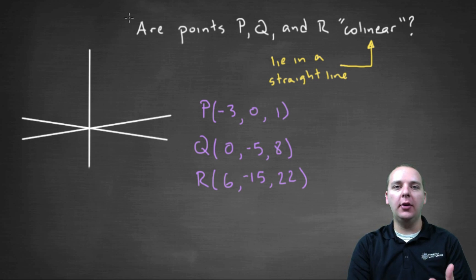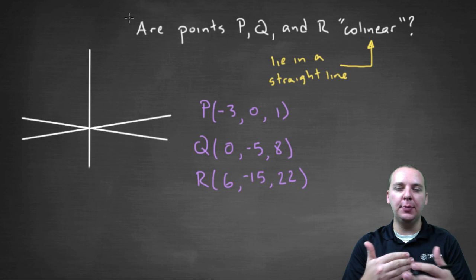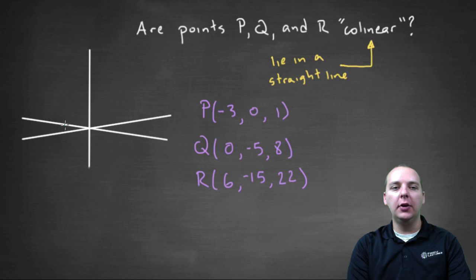This can be hard to tell in space because we don't have depth perception with a drawing on a sheet of paper. Even if three points look like they're in a line, let's say like here, here, and here.